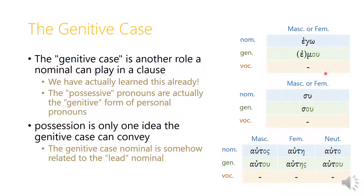So the genitive form of the first-person personal pronoun, ego, is emu, and the genitive form for the second person is su with omicron epsilon, and for the third person the genitive form was autu, or autes, or in the neuter, autu again.